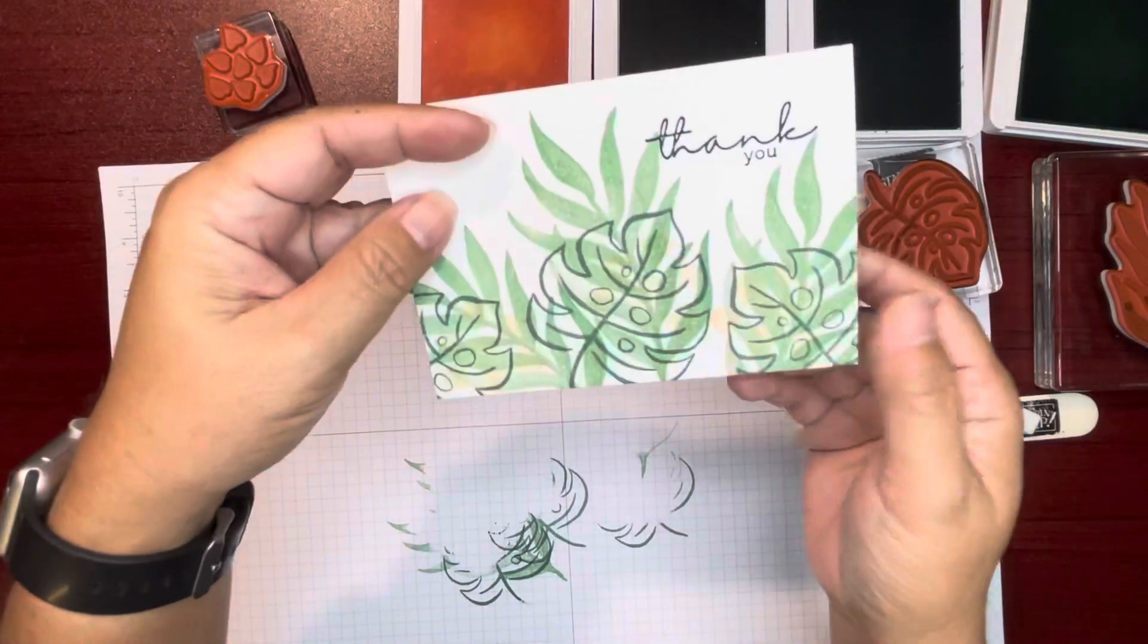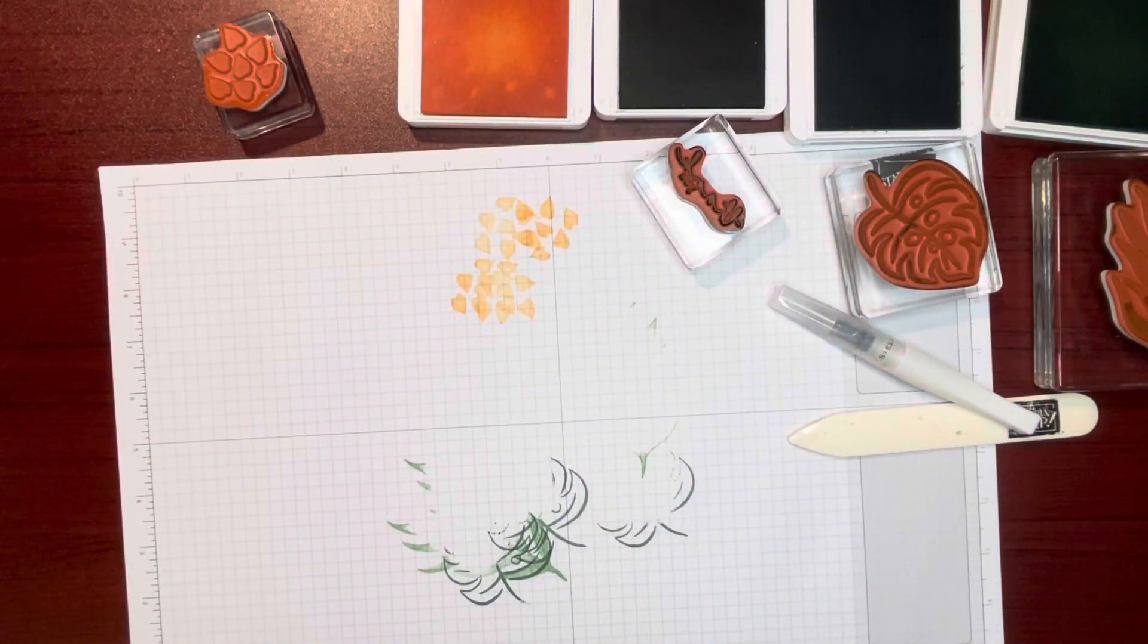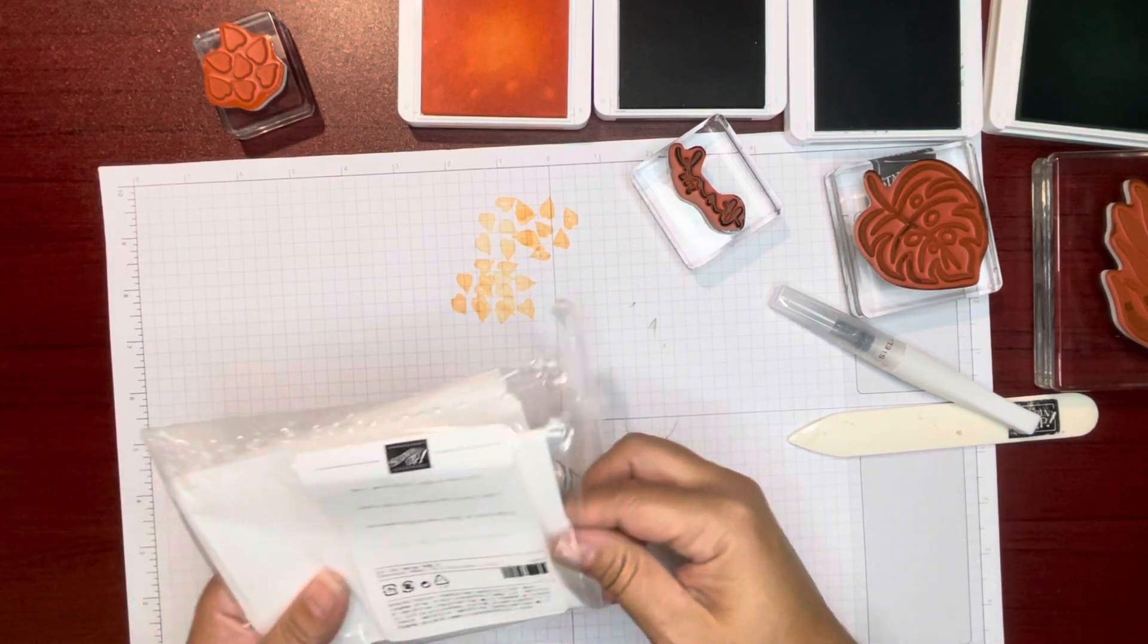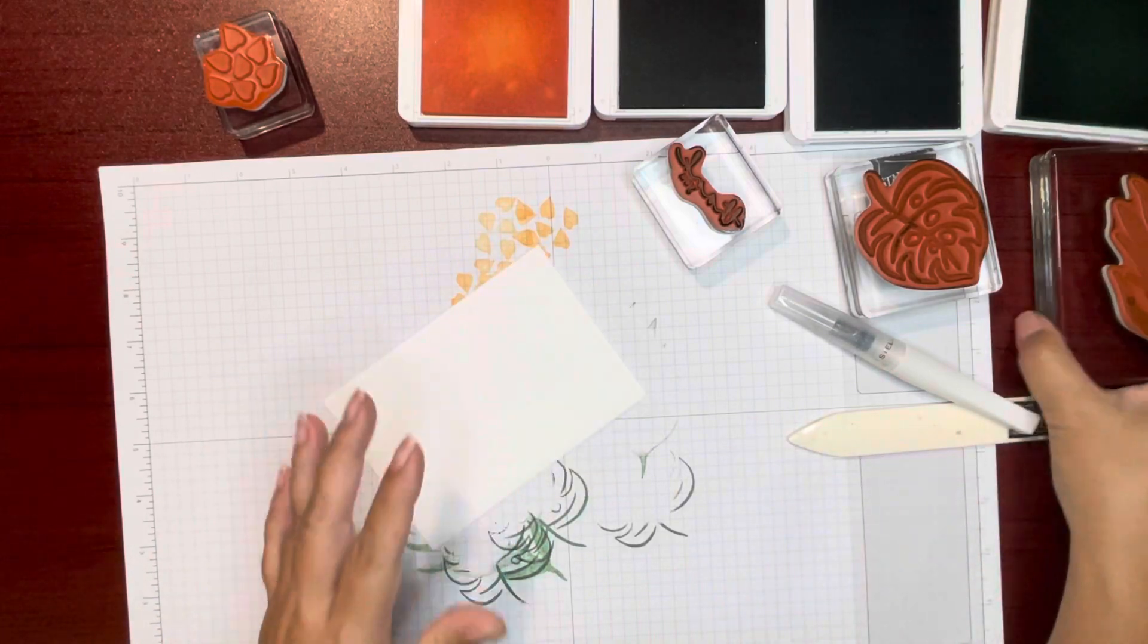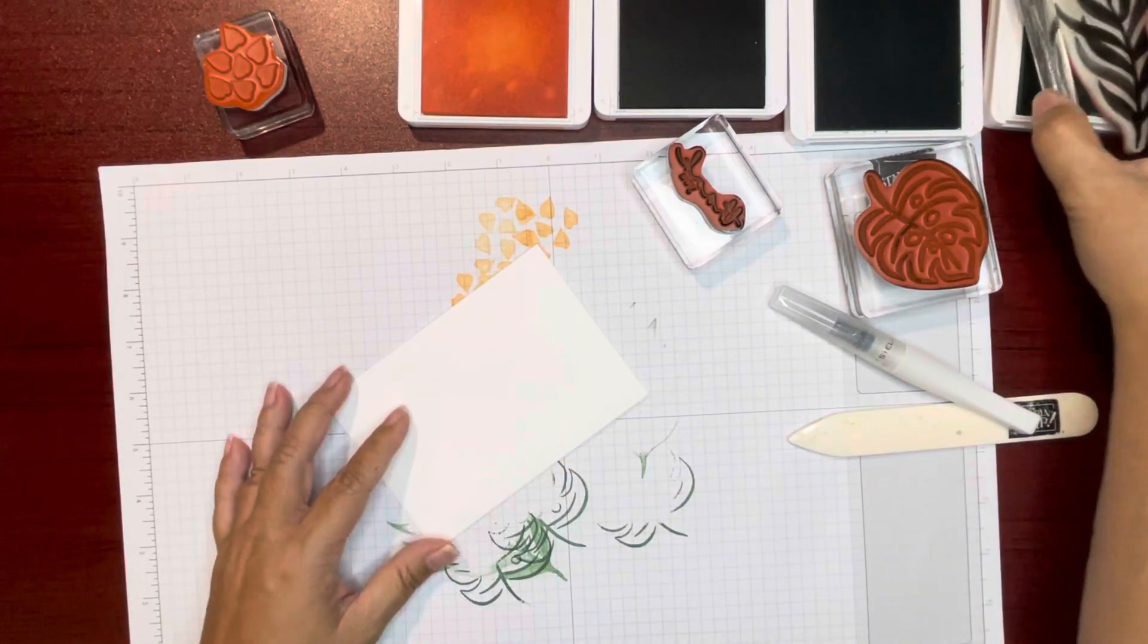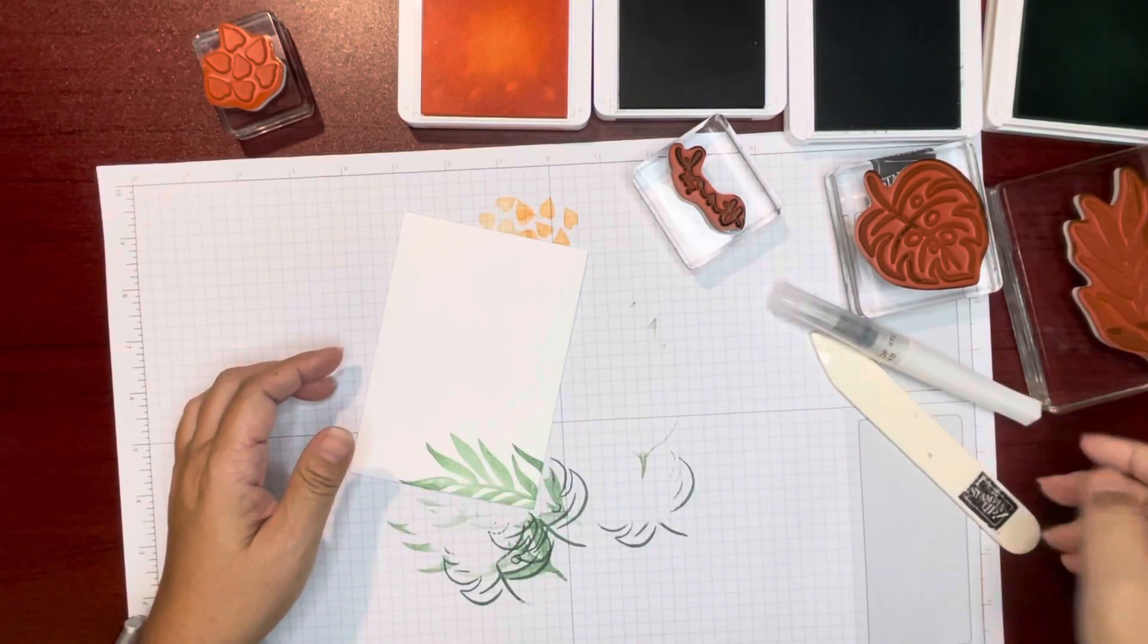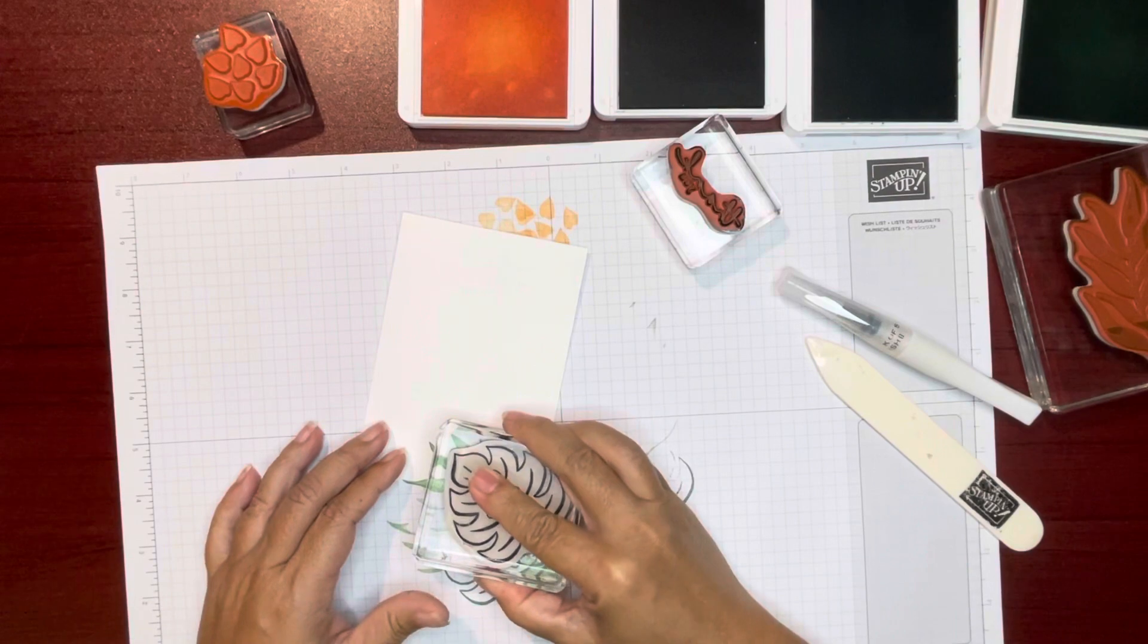Now we should grab an envelope, shouldn't we? Do the envelope too. Let me just grab an envelope quickly. I just thought of it right now. Let's just do the same thing as the inside on the envelope. Quick and easy guys, quick and easy. Stamp off and there we have it.